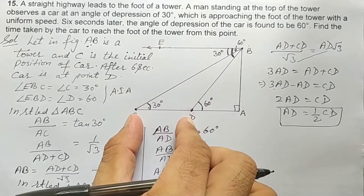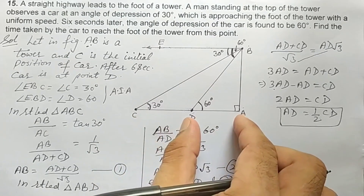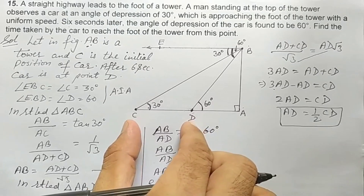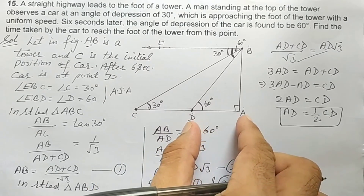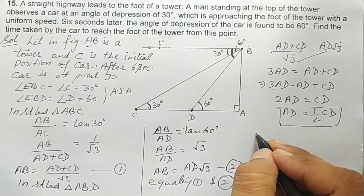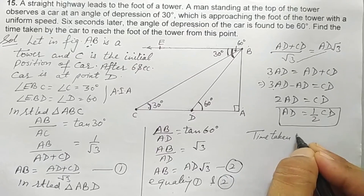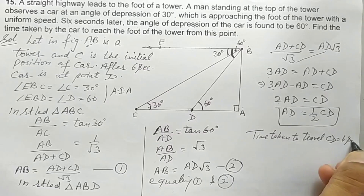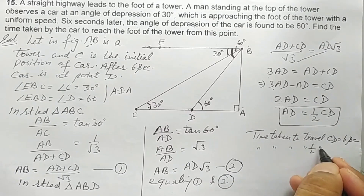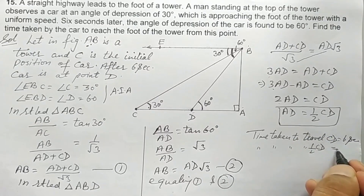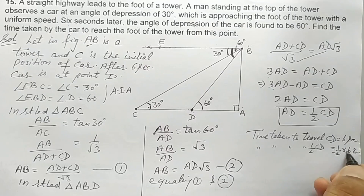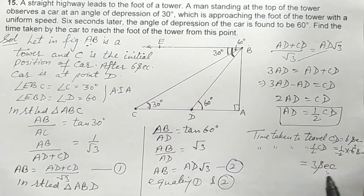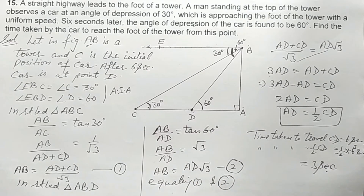Since AD is half of CD, and for travelling CD it takes 6 seconds, for travelling AD (which is half of CD) it will take half of 6 seconds, that is 3 seconds. Time taken to travel CD equals 6 seconds. Time taken to travel half of CD, which is AD, equals 3 seconds. So the required time is 3 seconds.